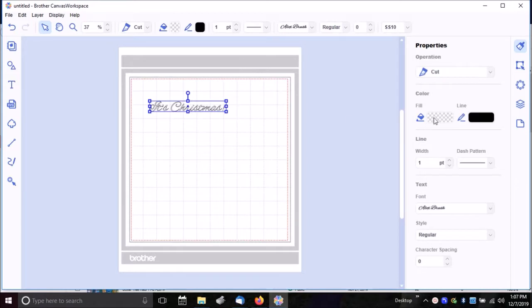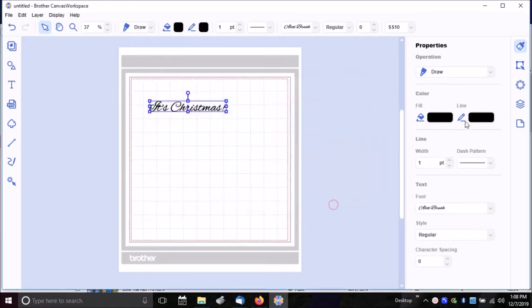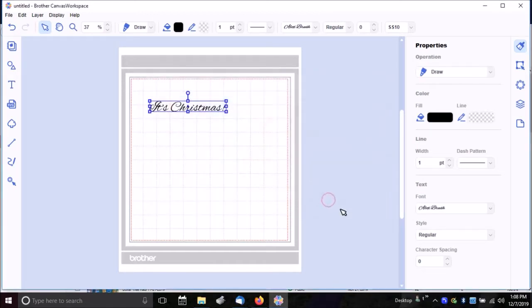And I will set this to a draw file. We are in the properties right here. And I'm going to set the fill. And I'm going to turn off the line by not filling it in.